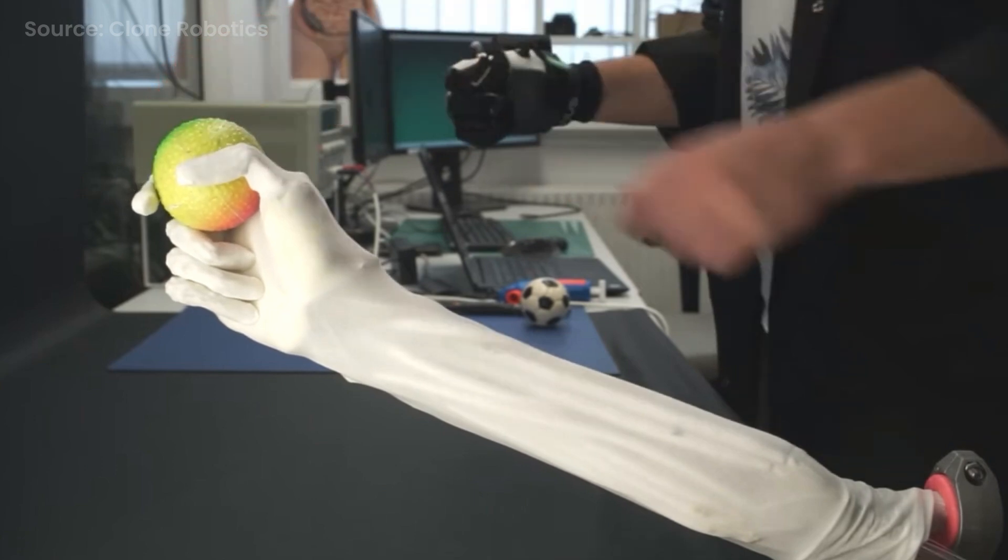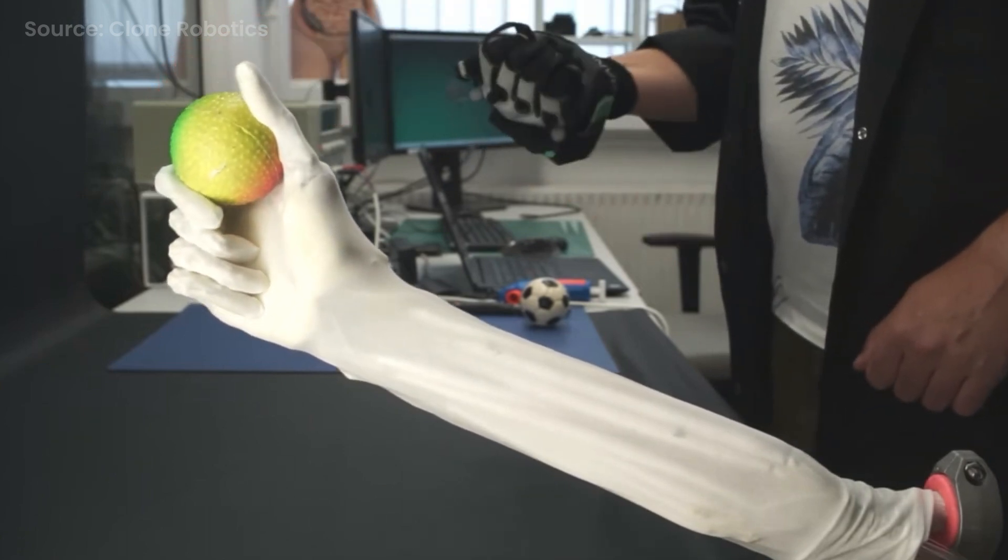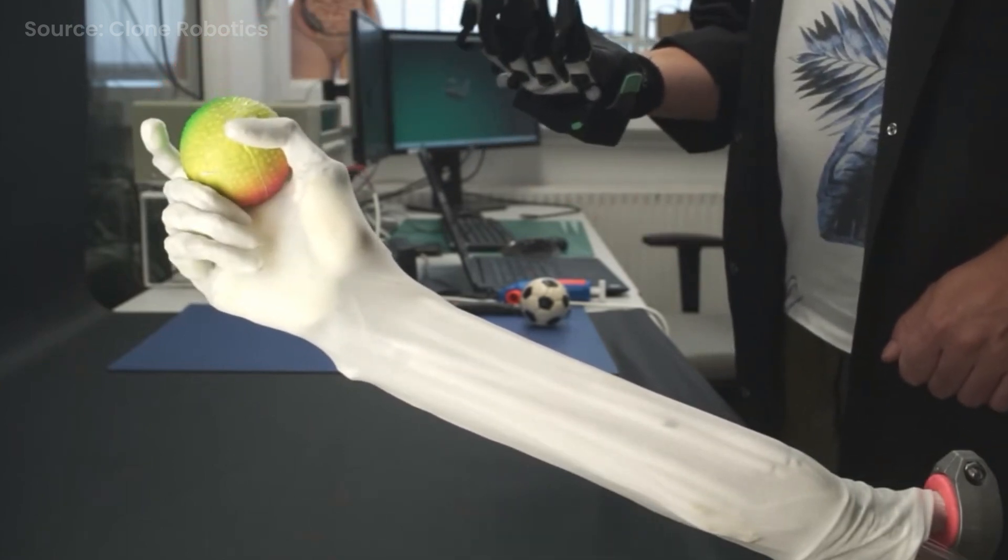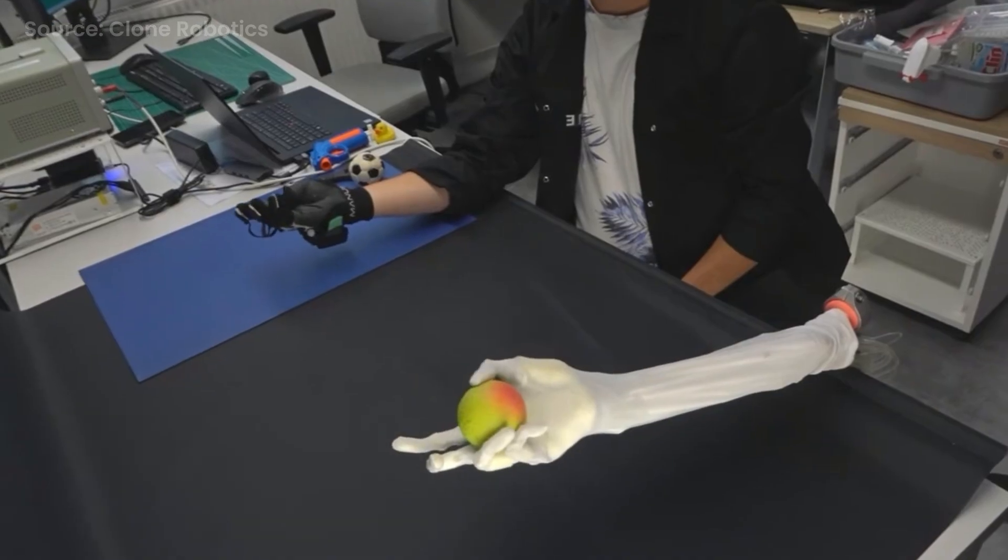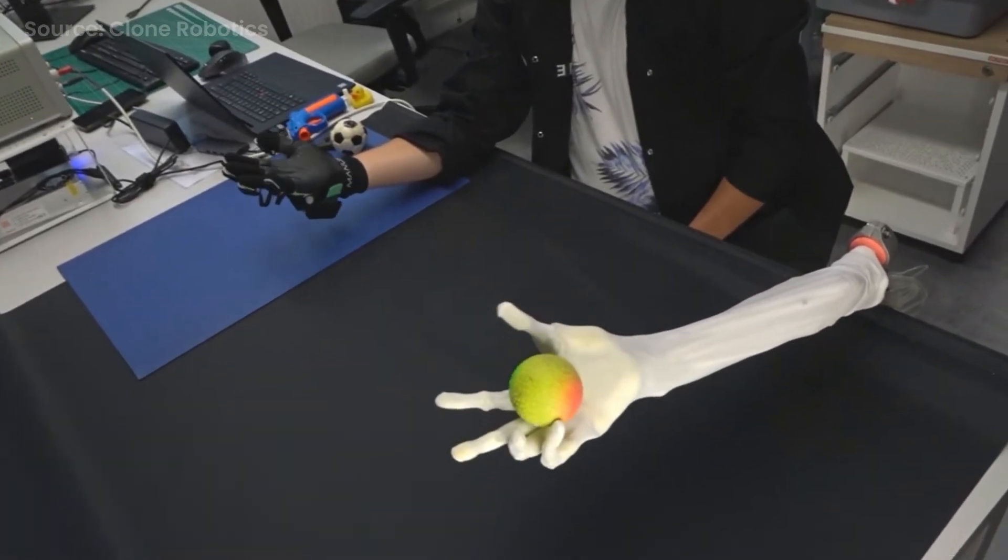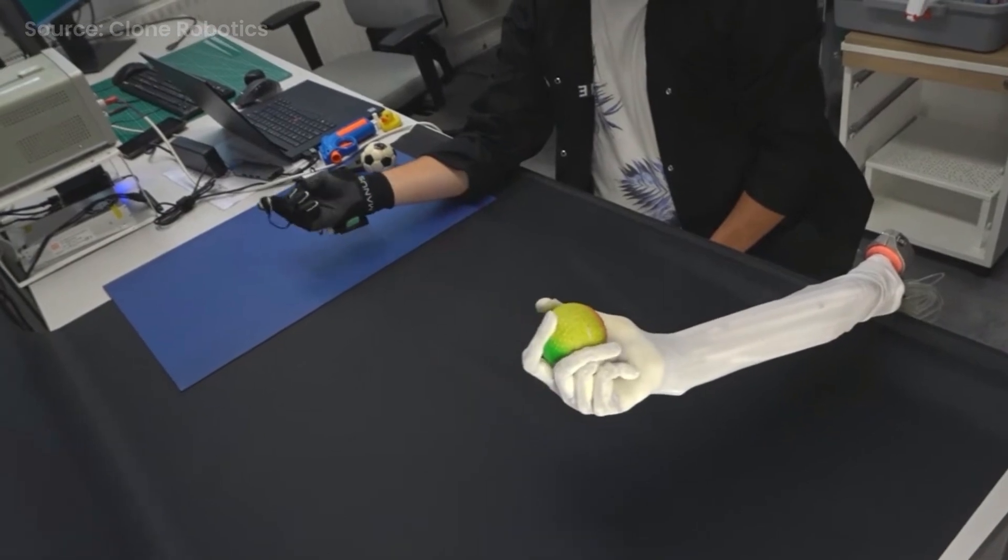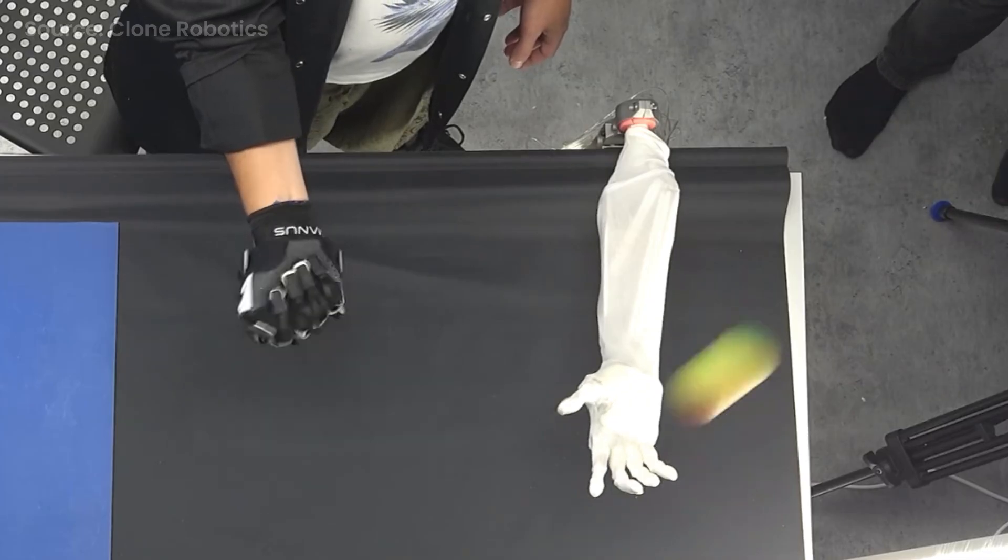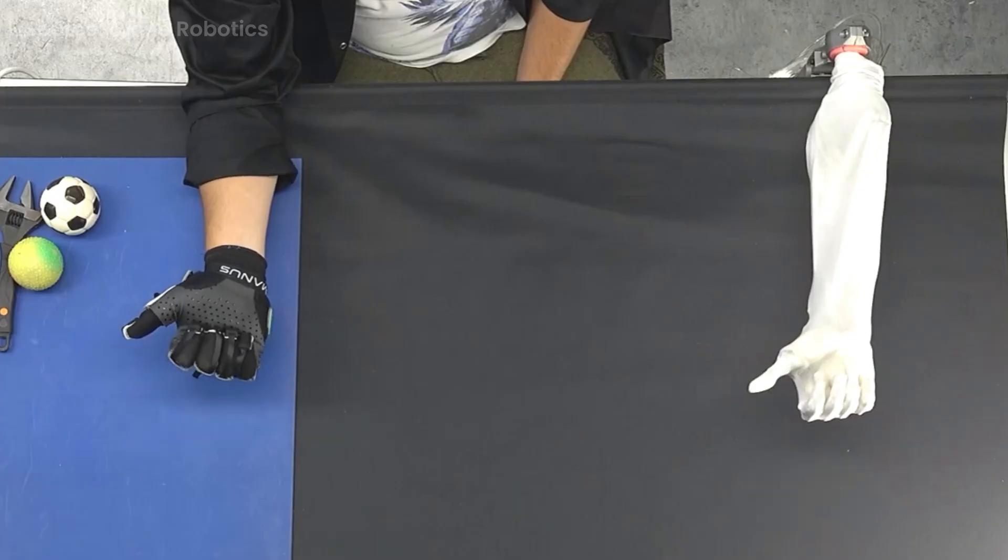And finally, before we move on to the torso, which I know you're dying to hear about, another cool thing I want to mention is that the Clone hand is teleoperable, meaning that there's basically this puppet master controlling the hand, which I just thought was super cool and you can see that in this video here.